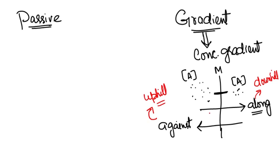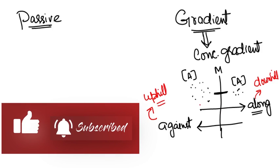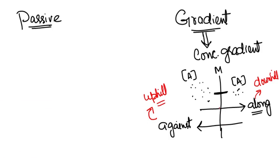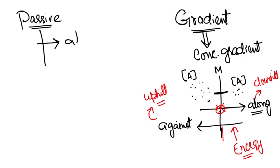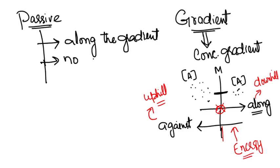When transport is along the gradient, the molecules have their own tendency to move in that direction, so no ATP or energy is required. But if the transport is uphill — against the gradient — then energy is required. So in passive transport: transport occurs along the gradient and no ATP is required.